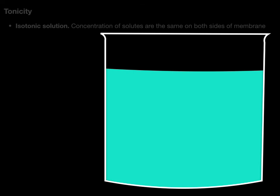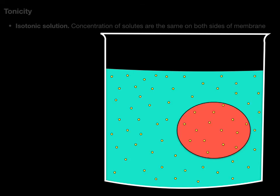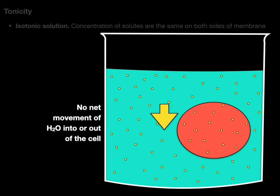Here's a beaker filled with water and I stick a red blood cell in there with a bunch of solutes. The solute concentration inside the blood cell and in the solution are the same, so there's no net movement of water into or out of the cell because the concentration of solutes on each side of the membrane are equal.